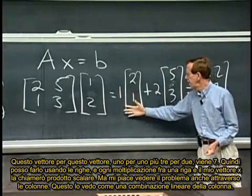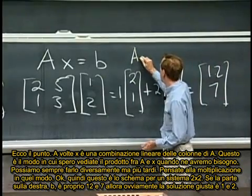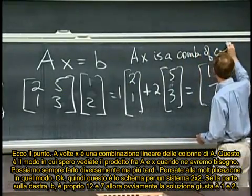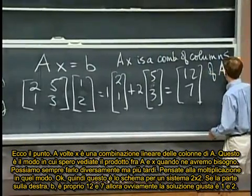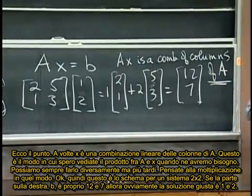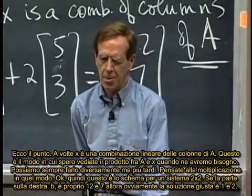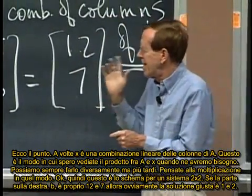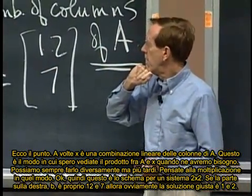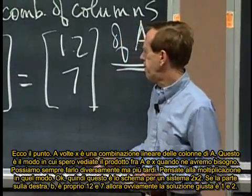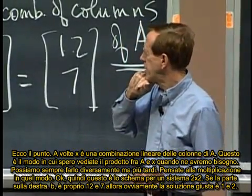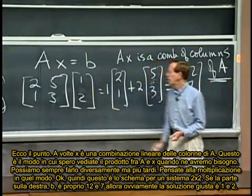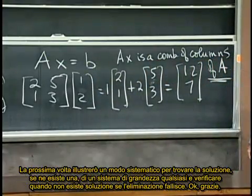I see this as a linear combination of the columns. So here's my point. A times x is a combination of the columns of A. That's how I hope you'll think of A times x when we need it. Right now we've got, with small ones, we can always do it in different ways, but later think of it that way. So that's the picture for a two-by-two system. And if the right-hand side b happened to be 12, 7, then of course the correct solution would be 1, 2.